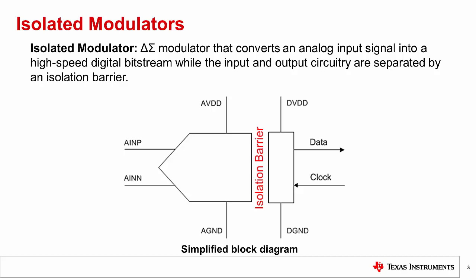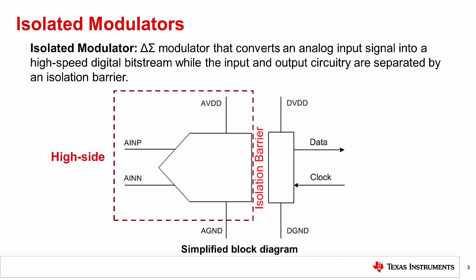This isolation barrier is highly resistant to electromagnetic interference, commonly known as EMI. Interference is a disturbance generated by an external source that negatively affects an electrical circuit. The purpose of the isolated modulator is to prevent noise currents on a high common mode voltage line from entering the local system ground and interfering with or damaging the low voltage circuitry.